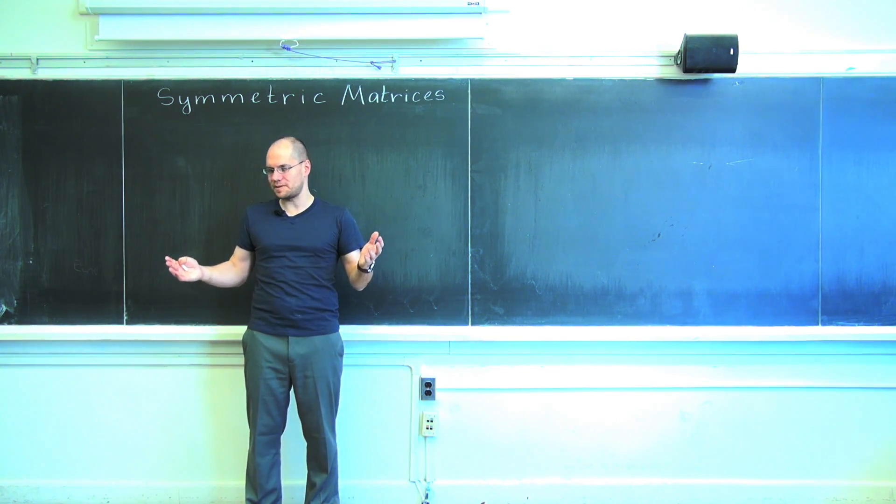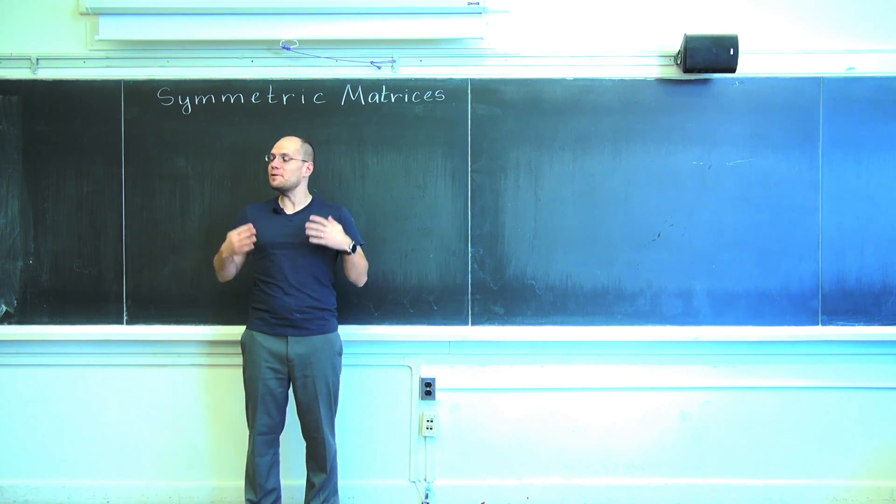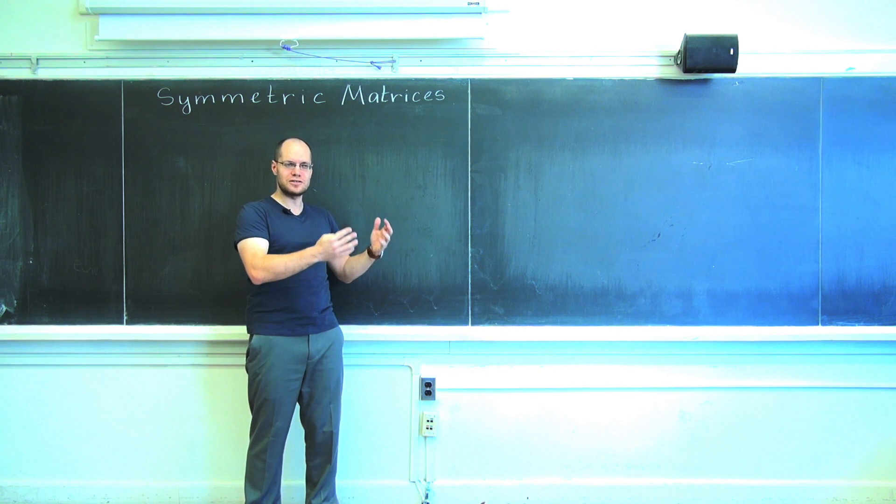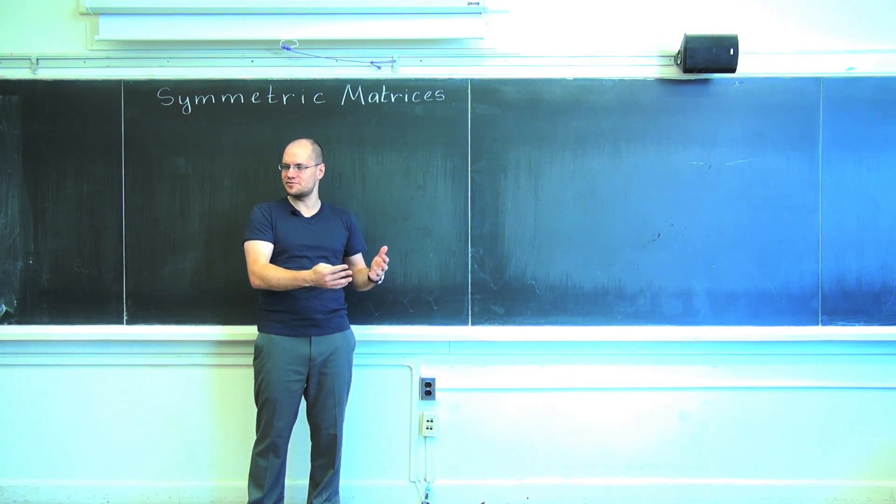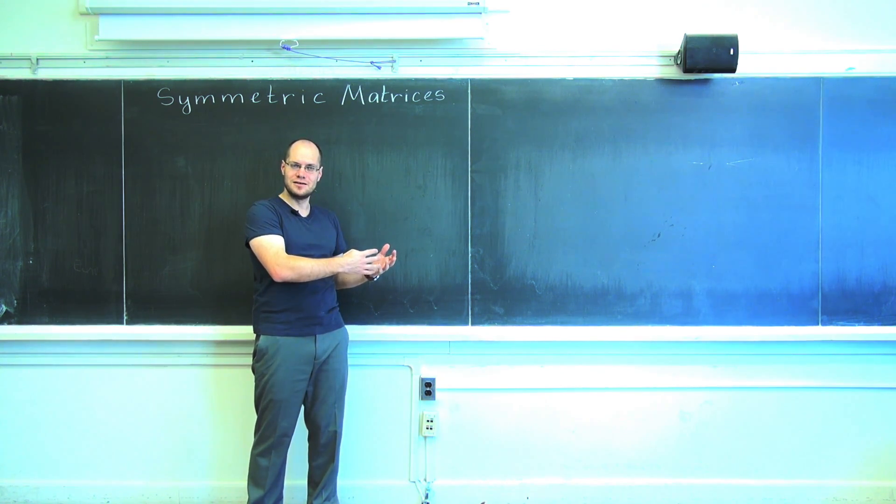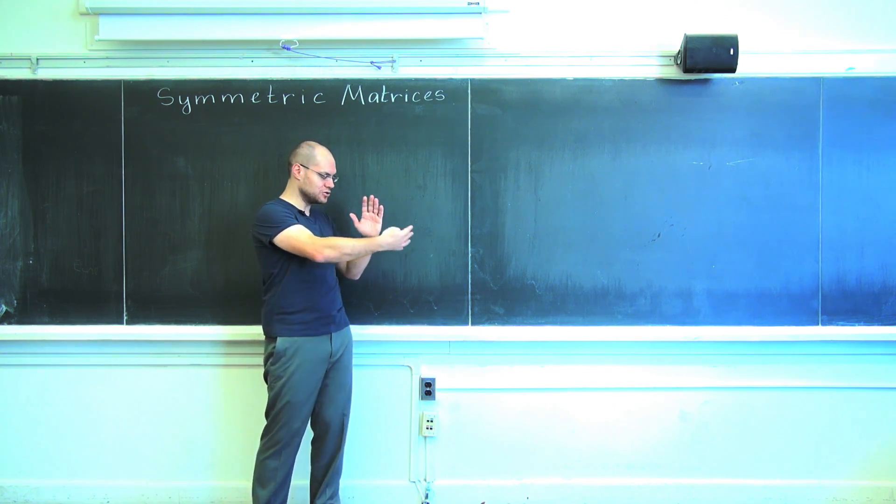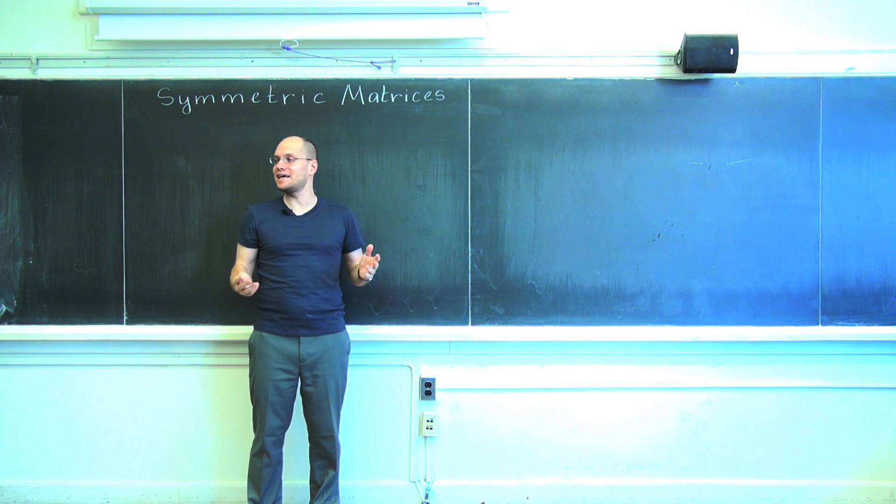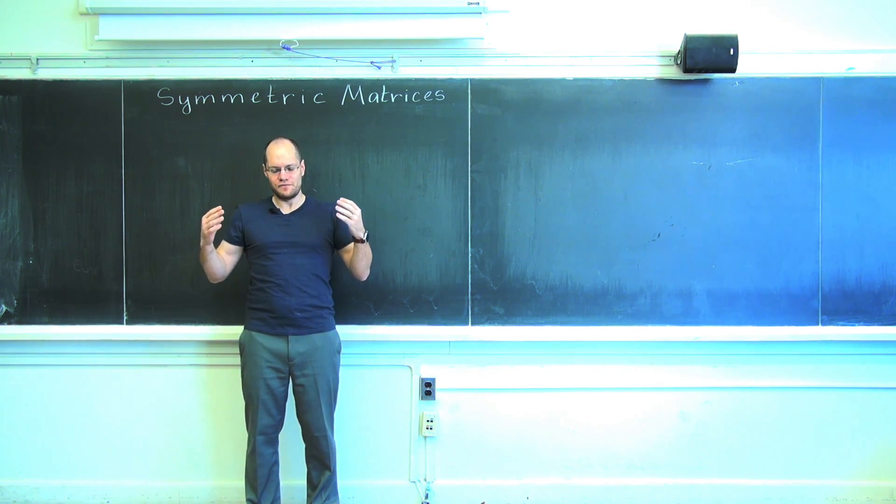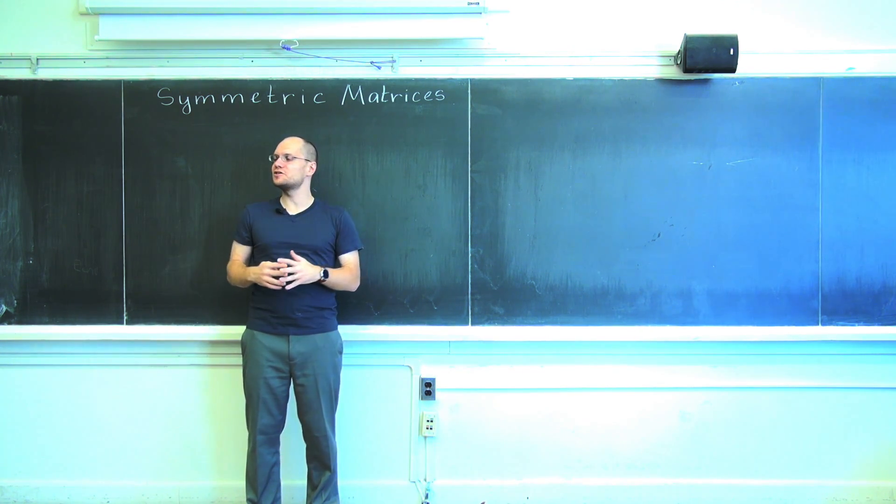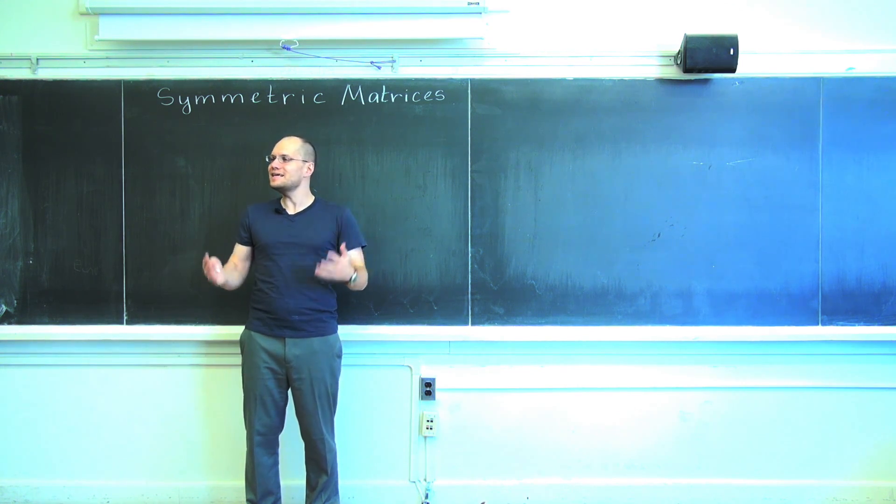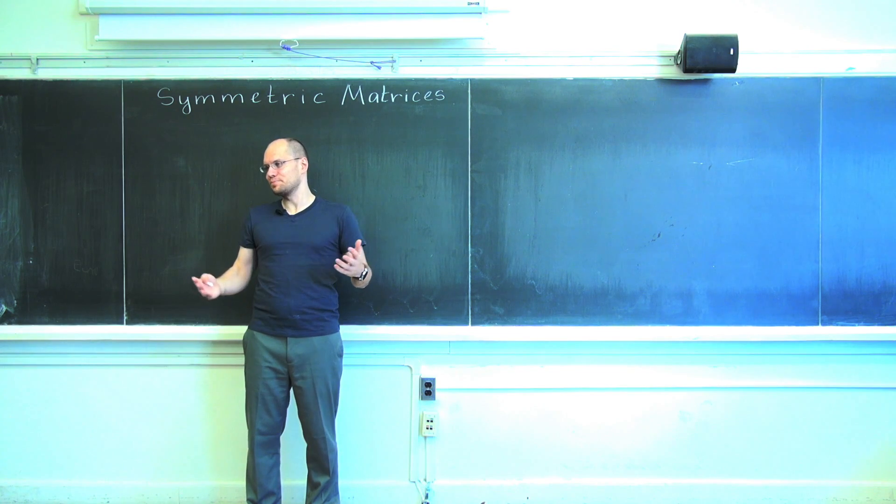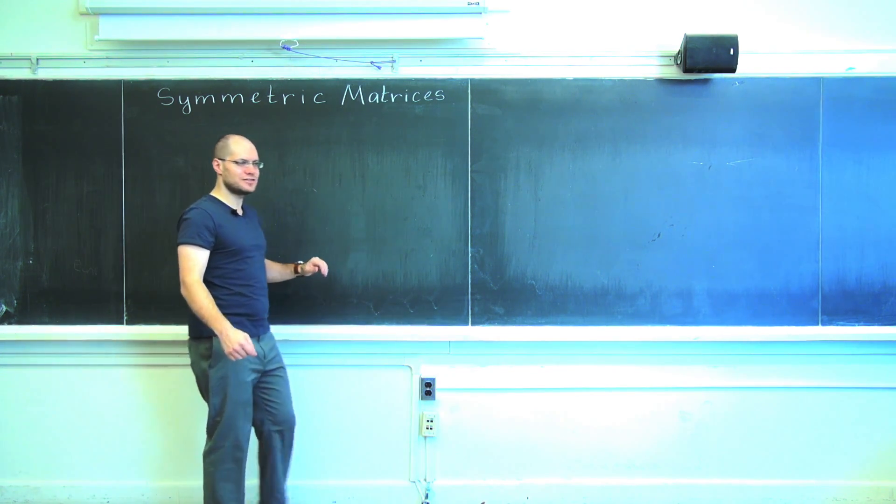So we'll go back to general inner products in the next lecture. This is the last lecture that takes place exclusively with respect to the standard inner product, and maybe that's appropriate because we're trying to talk about certain special properties of matrices for which the standard inner product plays a very particular role. It goes into the very mechanics of matrix multiplication. And in any case, all of these fundamental facts can be generalized very easily in a very straightforward way to an arbitrary inner product.